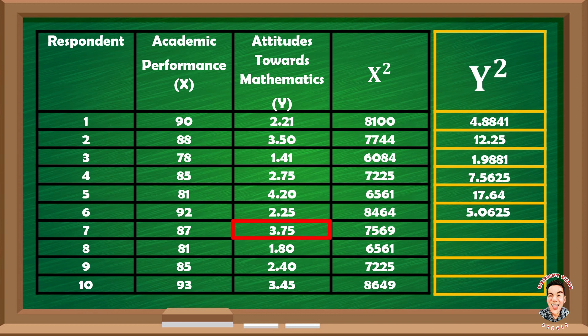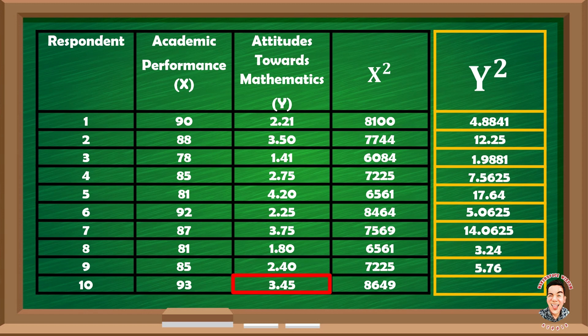Continuing: 3.75 squared equals 14.0625; 1.80 squared equals 3.24; 2.40 squared equals 5.76; and lastly, 3.45 squared equals 11.9025.